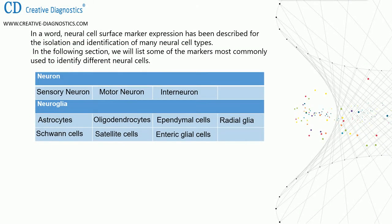Neural cell surface marker expression has been described for the isolation and identification of many neural cell types. In the following section, we will list some of the markers most commonly used to identify different neural cells, including sensory neuron, motor neuron, interneuron, astrocytes, oligodendrocytes, ependymal cells, radial glia, Schwann cells, satellite cells, and enteric glial cells.